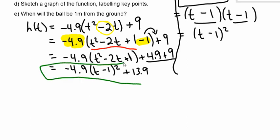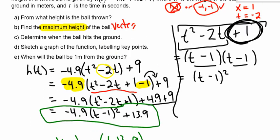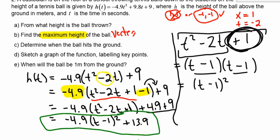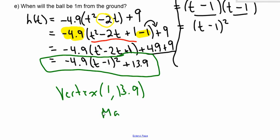So there is the exact same equation I was given, but it's now in vertex form. And because it's in vertex form, I can tell you that the vertex is at 1, 13.9. So the question was, what is the maximum height? And now I know that the maximum height is 13.9 meters above the ground.